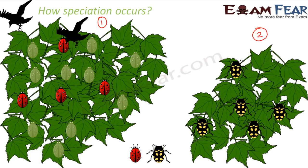This is how new species arise. From these beetles, new species formed through small, small changes because there are so many factors which can bring about a change — it can be mutation, genetic drift, migration, or natural selection. So this is how speciation occurs; it depends on a number of factors. To summarize: we studied what is evolution, how evolution occurs in different populations of organisms, and how evolution gives rise to speciation.